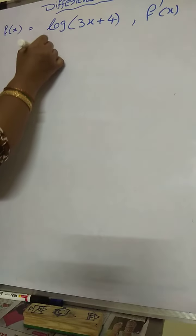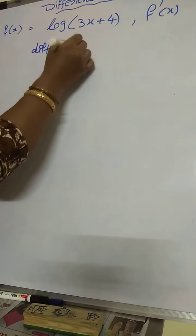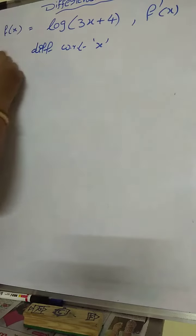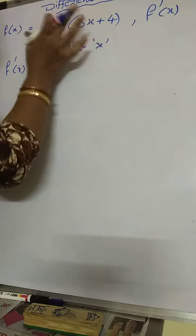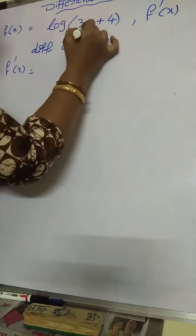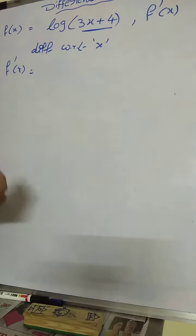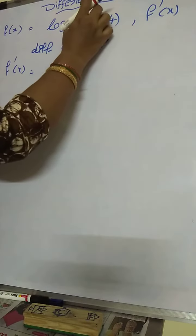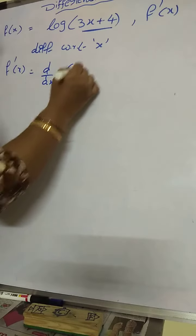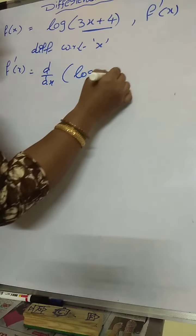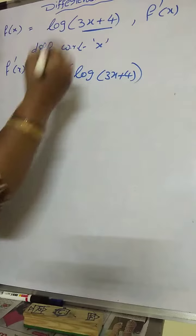Then differentiation with respect to x. f dash of x is equal to, see here chain rule is applied. How to apply chain rule? See log of is there. This whole term should take another one. Suppose y. Log of this term. Suppose the whole term is to take x. Then d by dx of log of 3x plus 4.